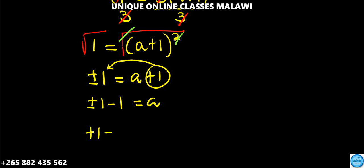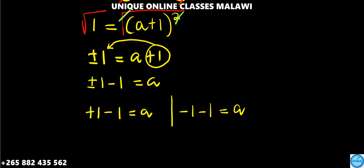So negative 1 minus 1, a is negative 2. That's what we get for the value of a.